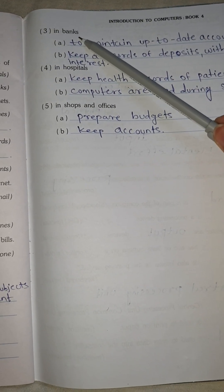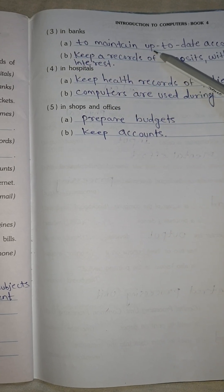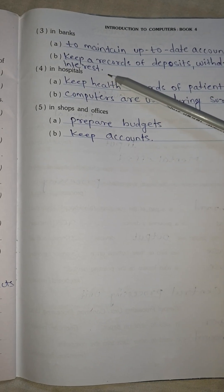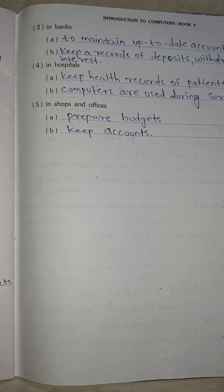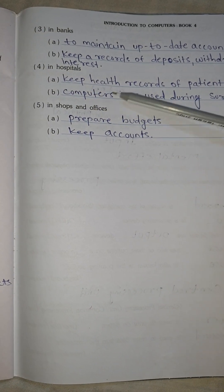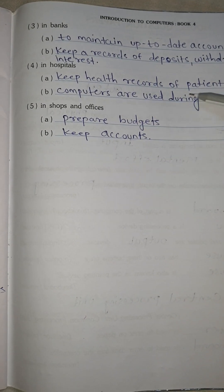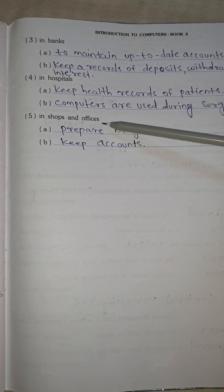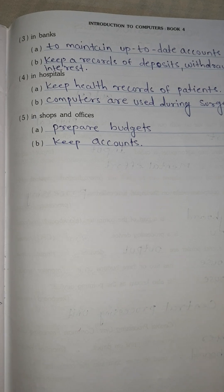Question No. 3: In banks — No. 2, maintain up-to-date accounts of customers. No. 3, keep records of deposit, withdrawal and interest. No. 4: In hospital — keep the health records of patients. Computers are used during surgery. No. 5: In shops and offices — prepare budgets, keep accounts.